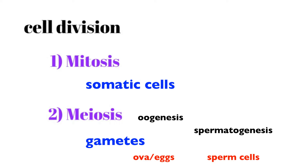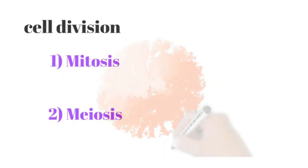Going back to mitosis — mitosis is cell division that produces somatic cells. These could be keratinocytes, the cells of our skin; hepatocytes, the cells of our liver; the cells of our heart muscle, myocardial cells; neurons. Any cells in the body that are not gametes are somatic cells, and they are produced via mitosis.